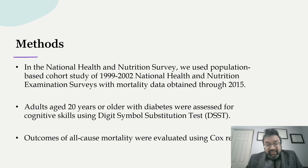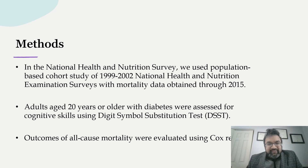For this study, the National Health and Nutrition Examination Survey was used. This is a population-based cohort started from 1999 to 2002, which is similar to other methodologies you may have seen in my prior presentations. Adults age 20 years or older were assessed using the Digit Symbol Substitution Test, and outcomes of all-cause mortality were evaluated using cognitive regression.